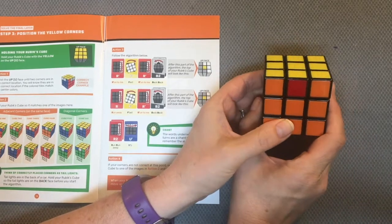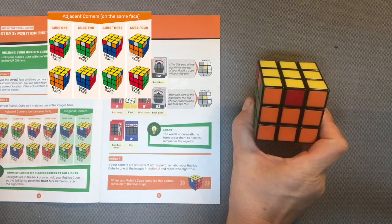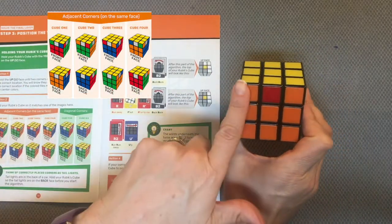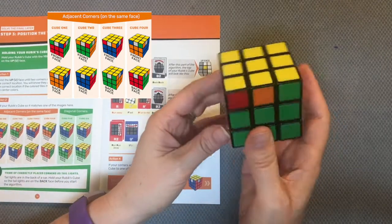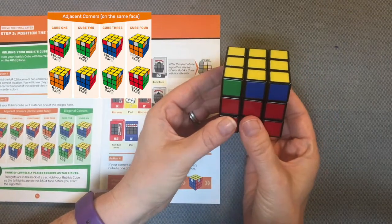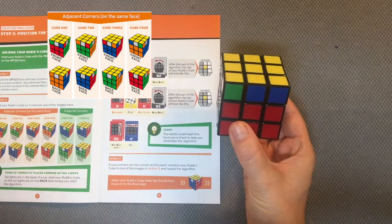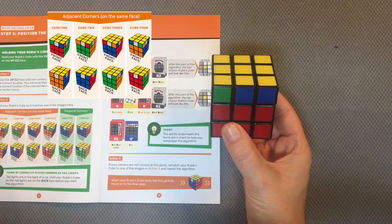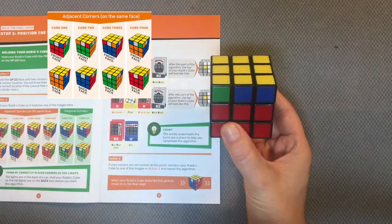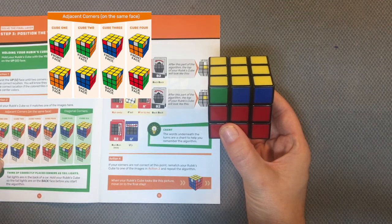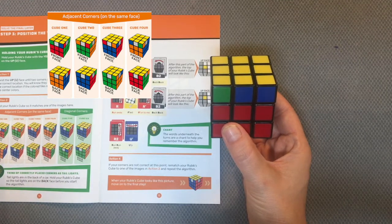It looks like I have cube one. My back face is the orange, so I will turn that around. My front face has the green on the left and the blue on the right. Remember, the gray means it could be any other color, so I know that I have adjacent corners on the same face.